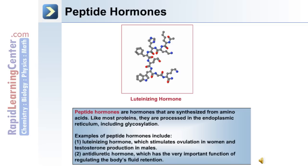Peptide hormones are hormones that are synthesized from amino acids. And like most proteins, they are processed in the endoplasmic reticulum, including the processes of glycosylation. Examples of peptide hormones include luteinizing hormone, which stimulates ovulation in women and testosterone production in males, and anti-diuretic hormone. Anti-diuretic hormone has the very important function of regulating the body's fluid retention.